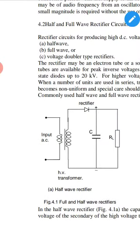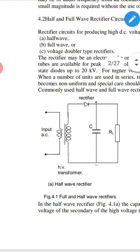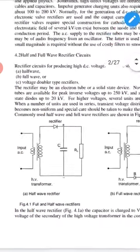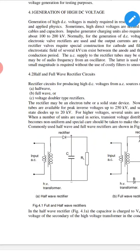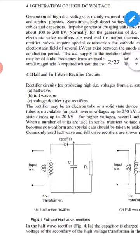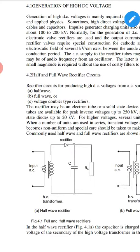The main topic here is how we generate high voltage DC. There are different methods: one is the rectifier circuit, another is DC generators. There are three main types — half-wave rectifier, full-wave rectifier, and bridge rectifier.